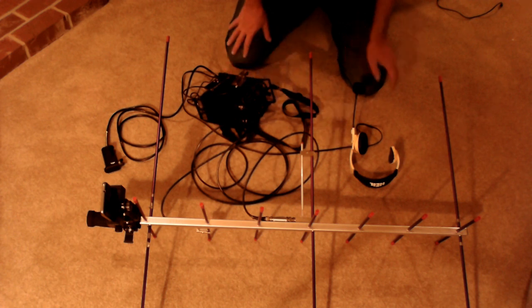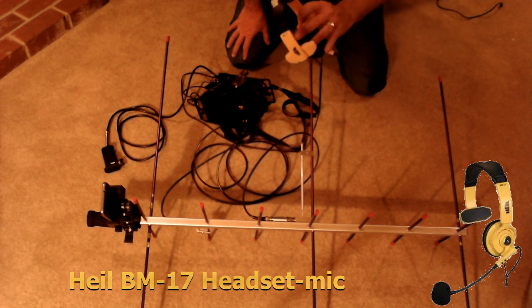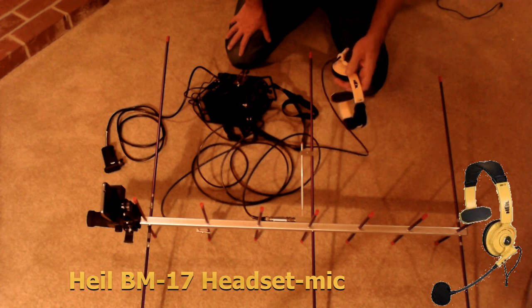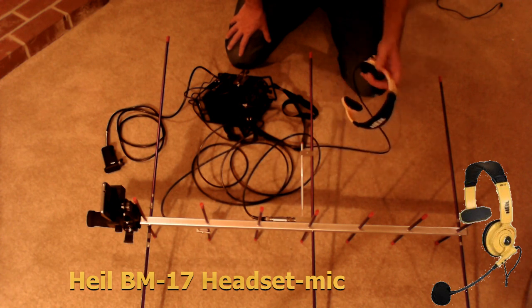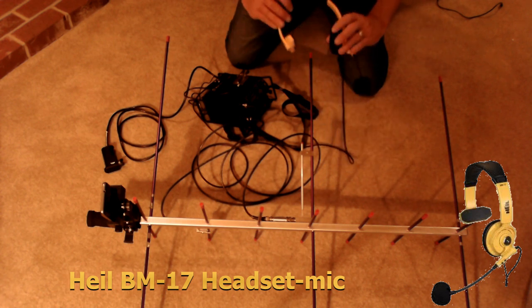The next component is a Heil headset. This is the BM-17, and having a headset for linear satellites is essential. You want to have a good headset, and Heil makes one of the best. You can get the kind with one earphone or two. I prefer just one.